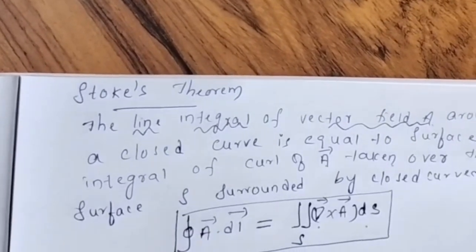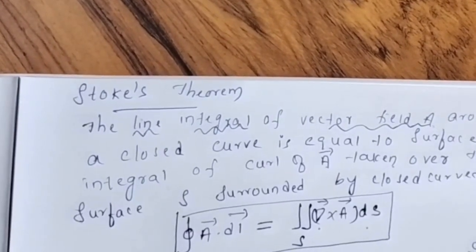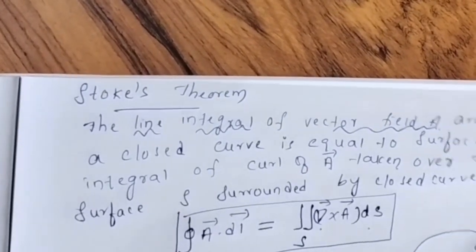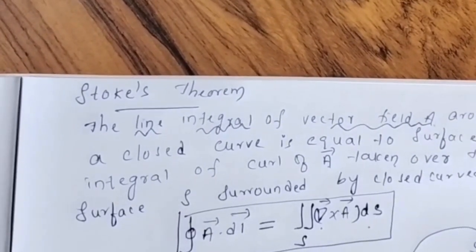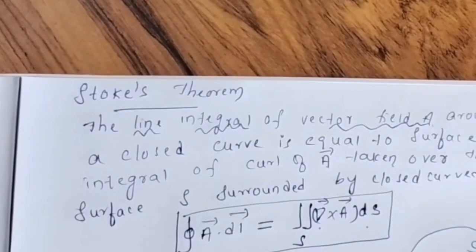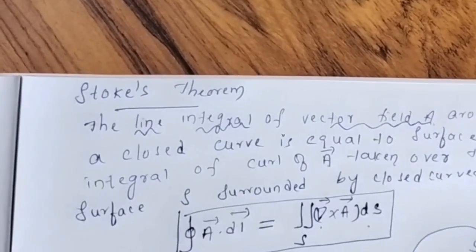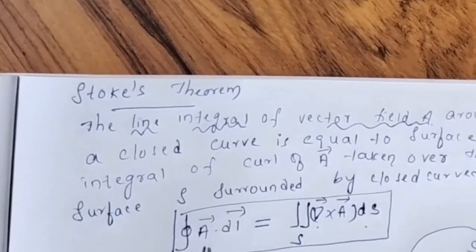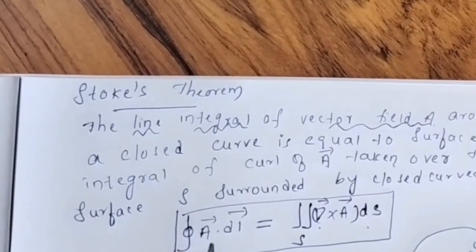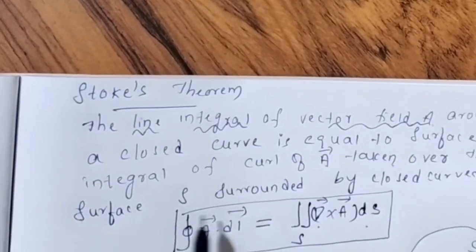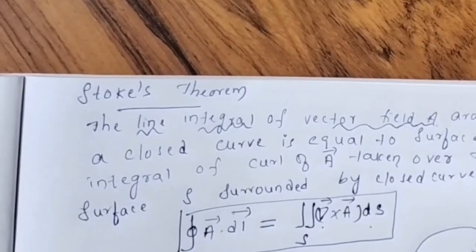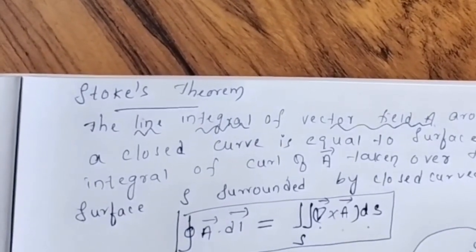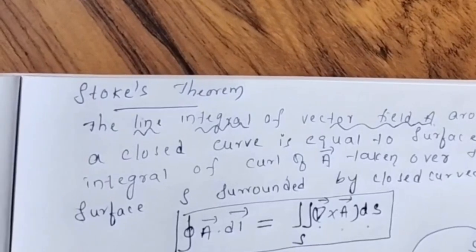Let us take some surface S. This surface S is surrounded by some closed curve — let it be C. What Stokes theorem says is: the line integral of vector field A around the closed curve C is equal to the surface integral of curl of A taken over the surface surrounded by the closed curve.